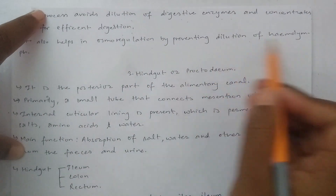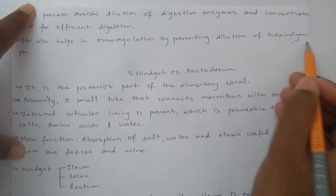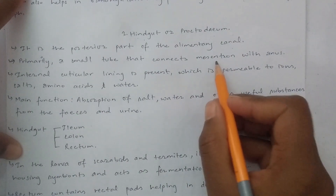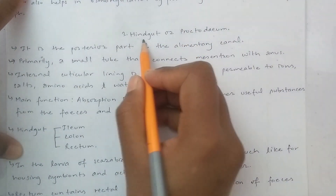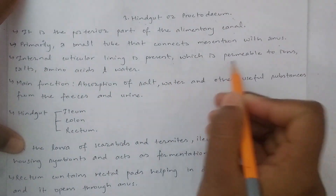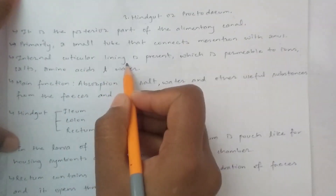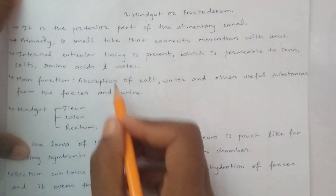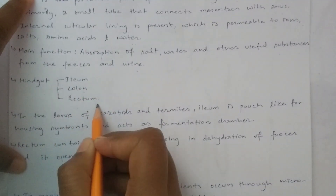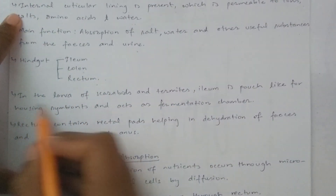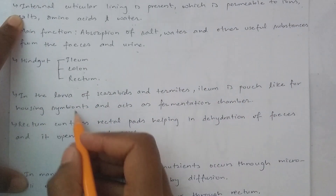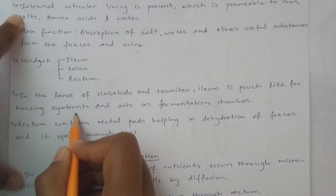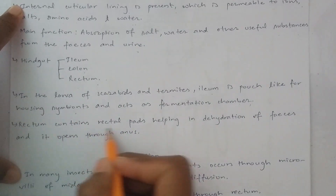The hindgut also helps in osmoregulation by preventing dilution of the hemolymph. This is the posterior part of the alimentary canal. The hindgut or proctodium has an internal cuticular lining that is permeable to ions, salts, and water. The main function is absorption of salt, water, and other useful substances from feces and urine. In larvae of scarabaeid beetles, the ileum has a pouch-like structure serving as a fermentation chamber. The rectum contains rectal pads helping in dehydration of feces, and it opens through the anus.